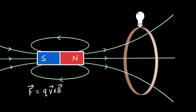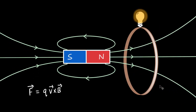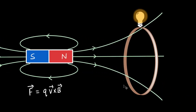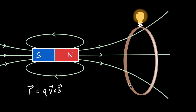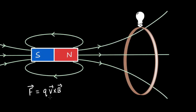But what about the case when we move the magnet towards and away from the coil? Even in this case, we can see the bulb glowing, which means there is some induced EMF and induced current as well. But who is pushing these electrons? We know the coil was stationary, so the electrons had no velocity — this V was zero. So who pushed these electrons in the first place?